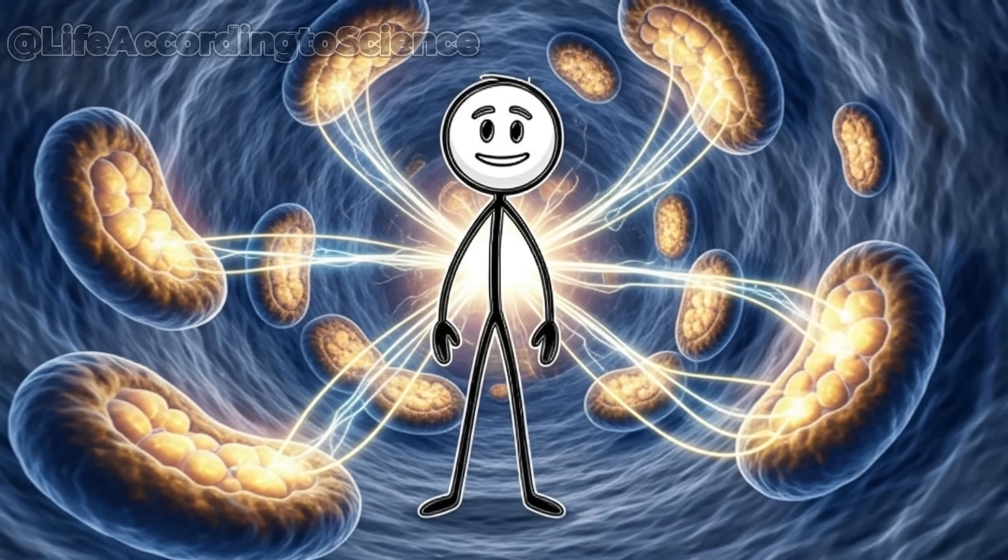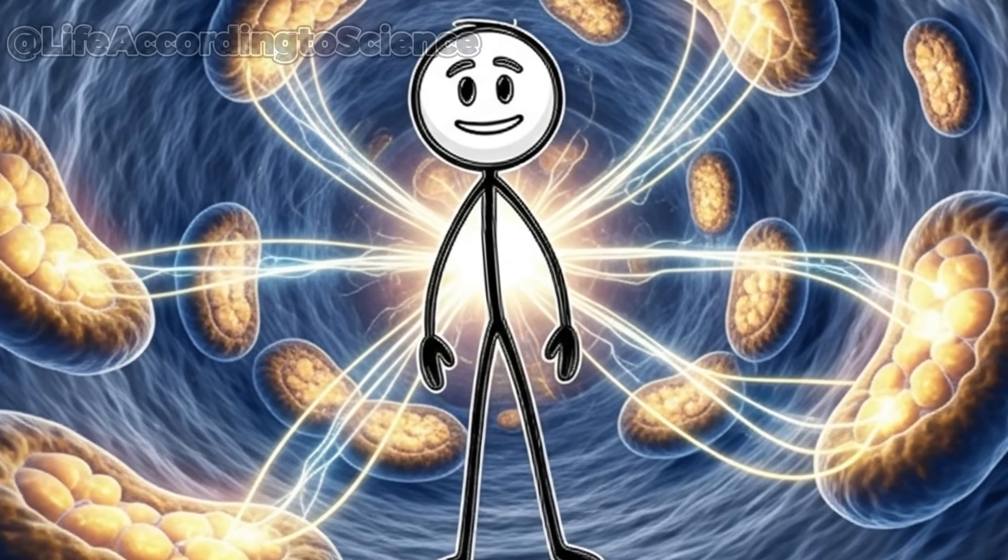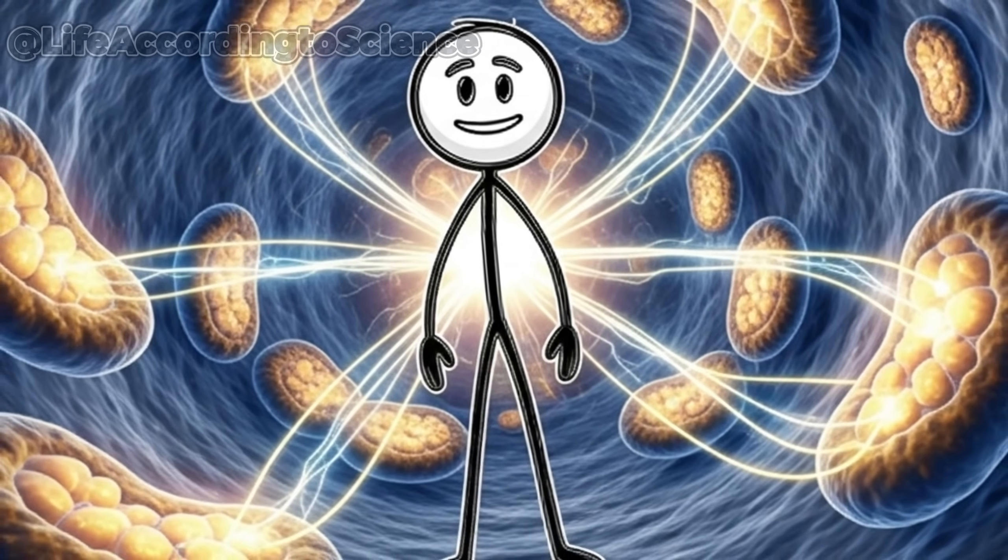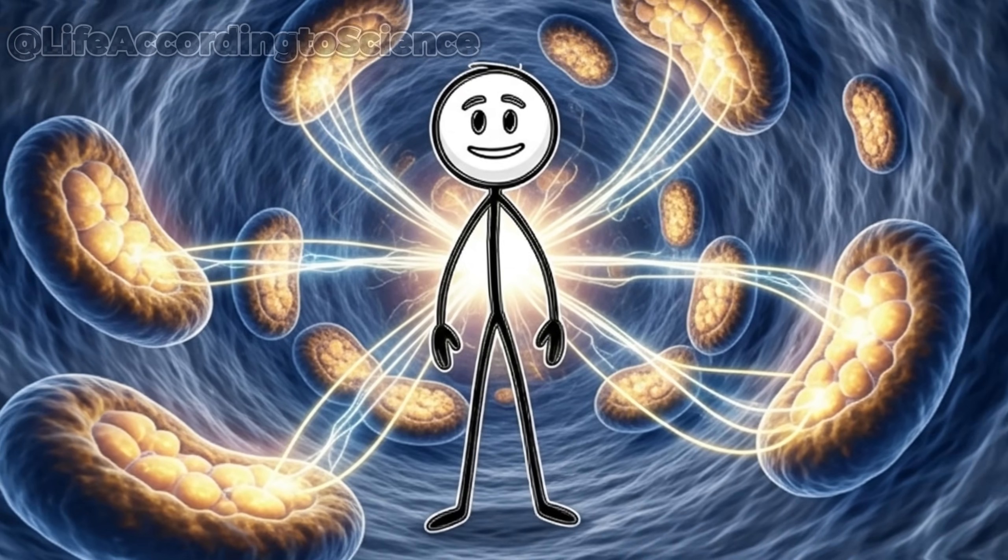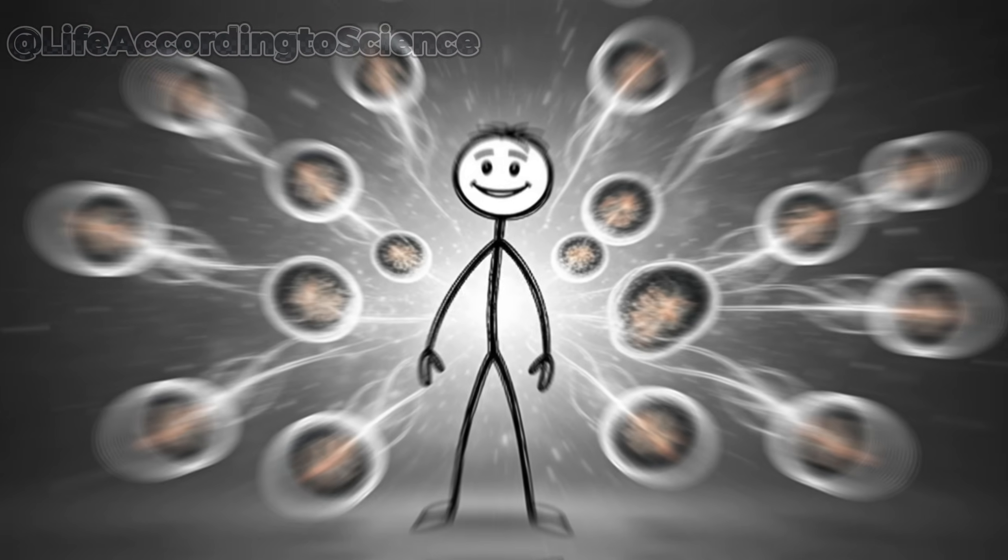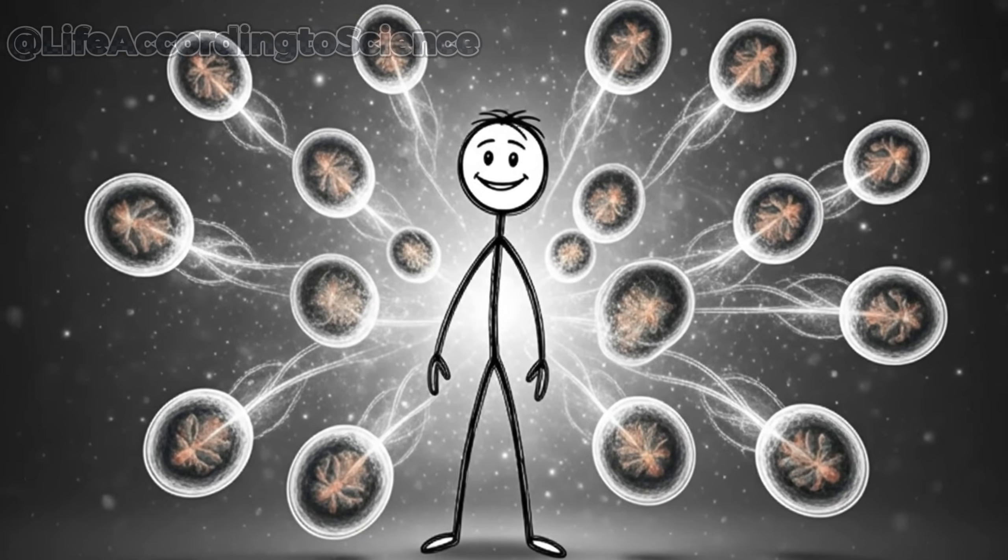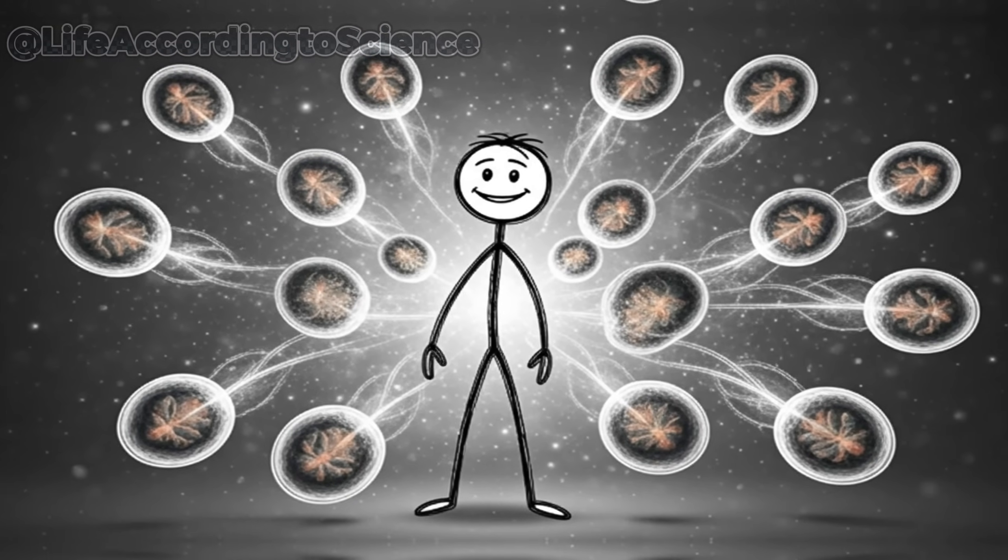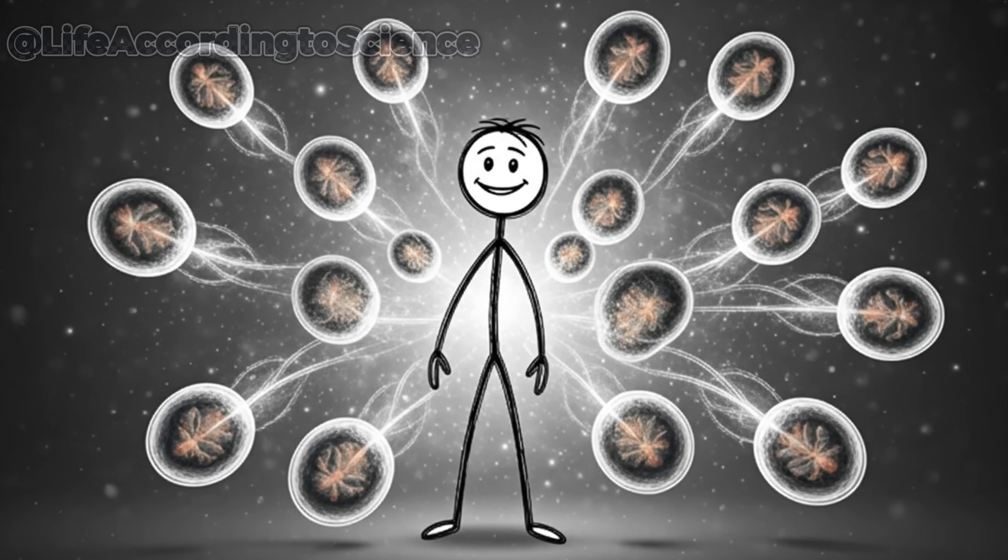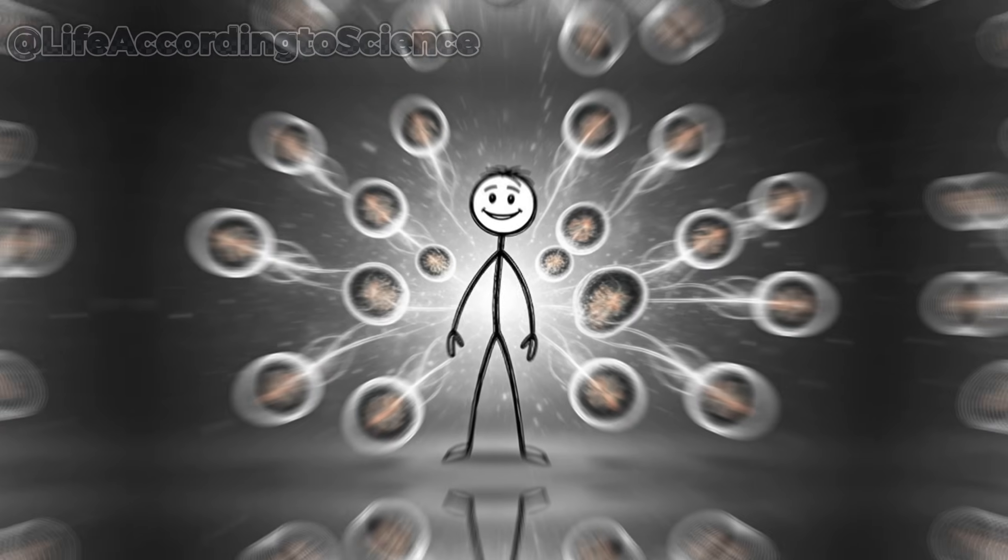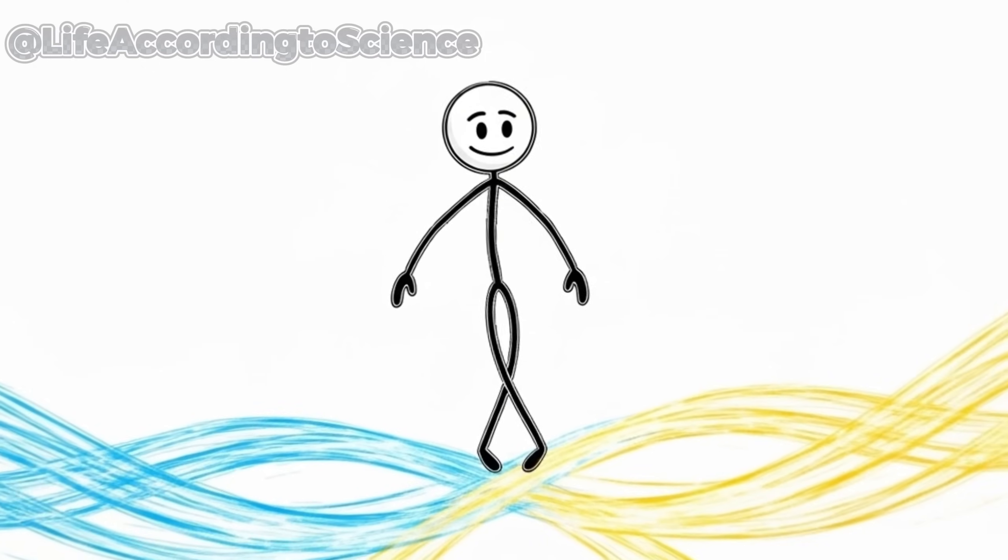With insulin low and ketones high, your cells switch to what scientists call mitochondrial optimization. These tiny power plants inside you start producing energy with less waste and more endurance. You're no longer a sugar-dependent machine. You're a hybrid engine burning clean fuel.